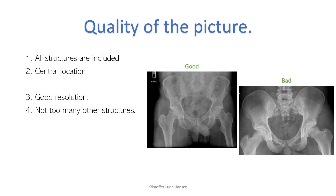To assess the quality of the picture you have to look at three things. All the structures should be included — you have to ensure that the appropriate anatomy is visible within the borders of the image, usually above the iliac crest to one-third down the femoral shaft. Both trochanters should be included.